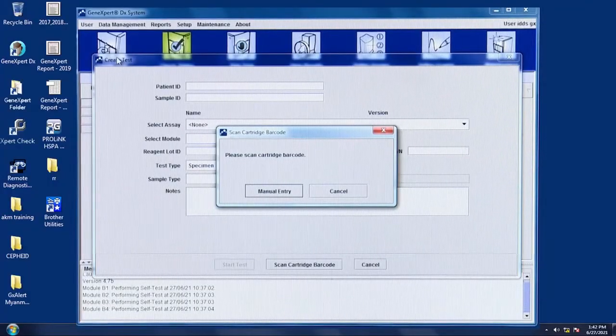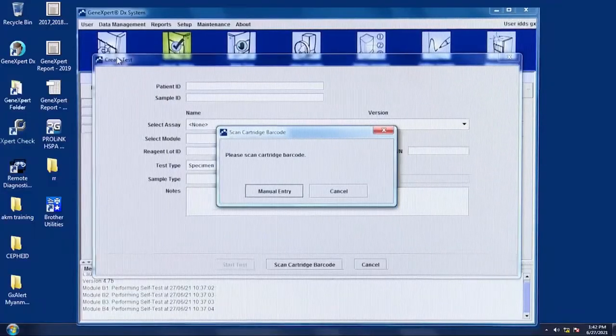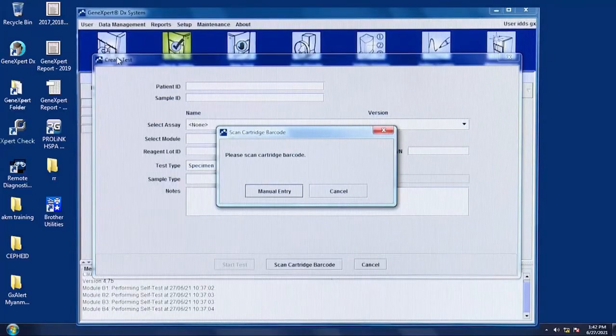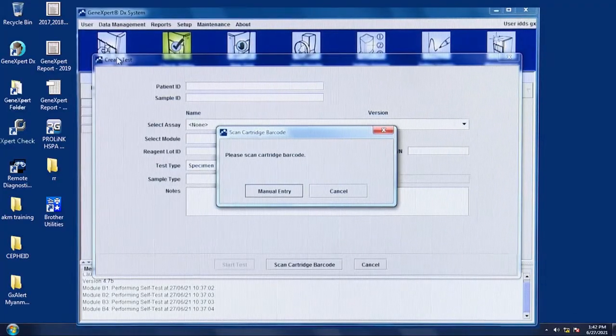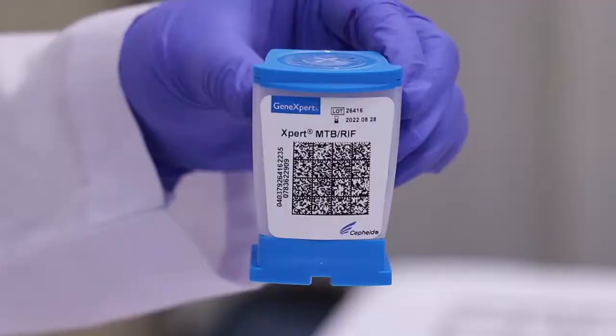If the cartridge barcode can't be scanned due to damage to the barcode, it can be entered manually into the software. To do so, choose Manual Entry. The Scan Cartridge Barcode window appears. Then, put the numbers on the left side of the barcode without space and enter.